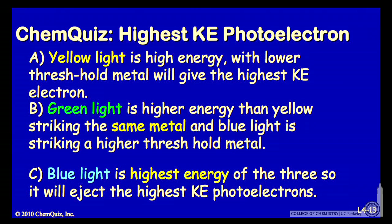Or B, green light is higher energy than yellow light and is striking the same metal. Blue is striking a higher threshold metal, so green on metal one should be the highest. Or blue light is the highest energy of all three photons, so it should eject electrons with the highest kinetic energy. Think about those three for a minute and make another selection.